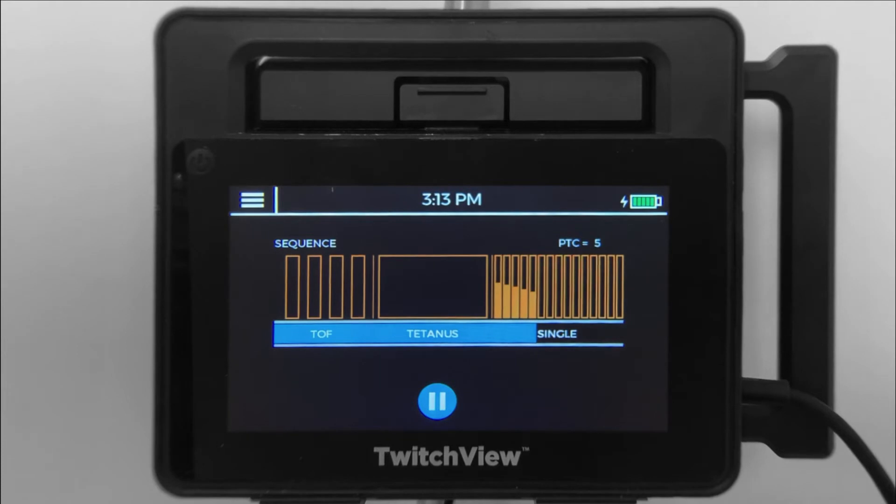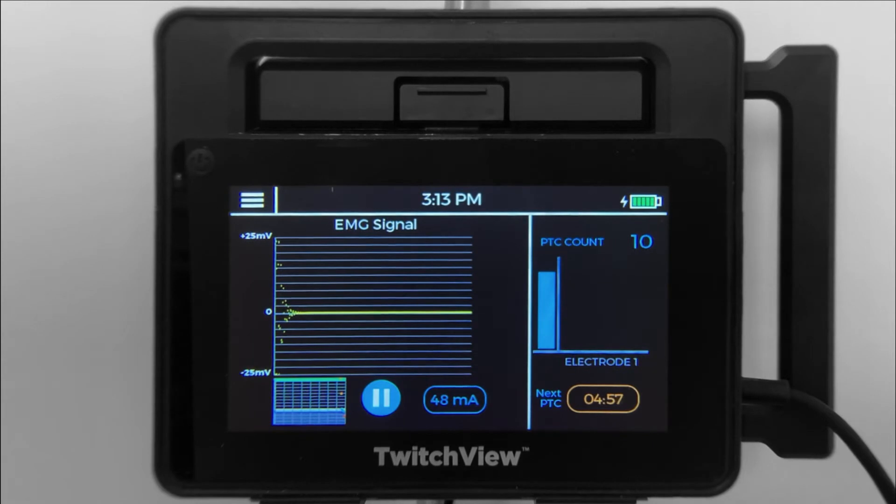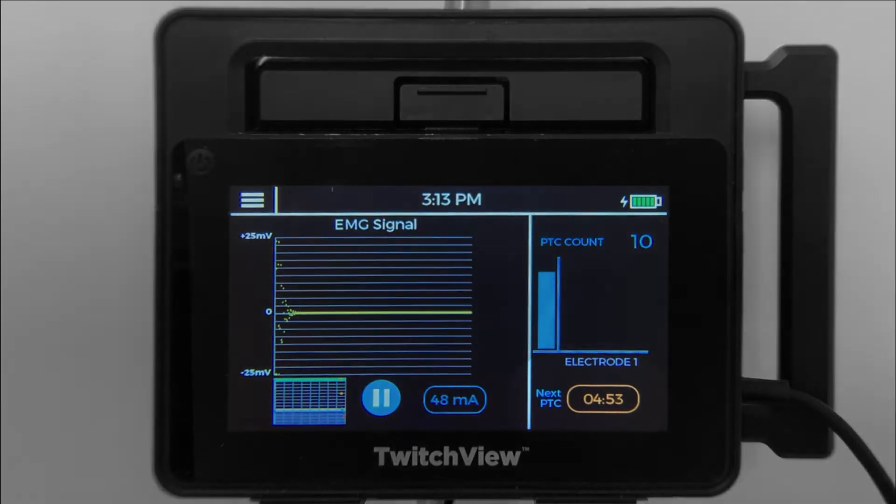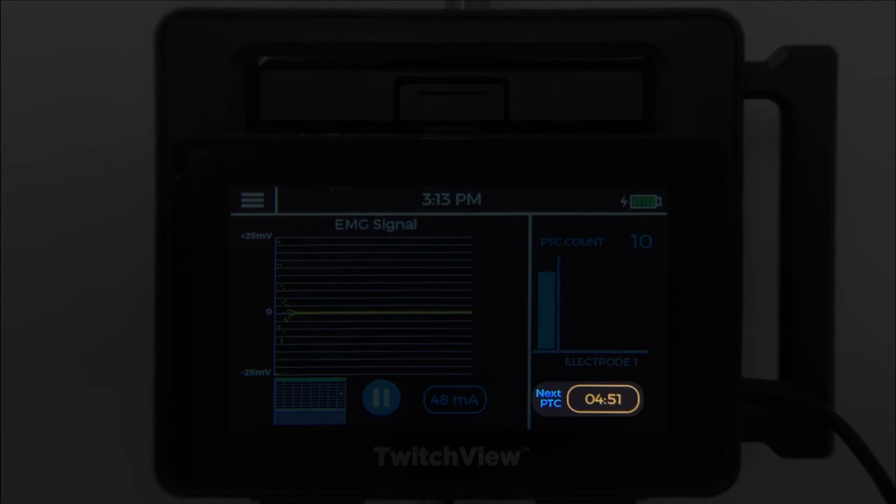A post-tatanic count of 0 represents profound paralysis, and a post-tatanic count of 15 indicates that the patient will respond to TRAIN-4 stimulation soon. Post-tatanic count mode defaults to 5-minute measurement intervals.